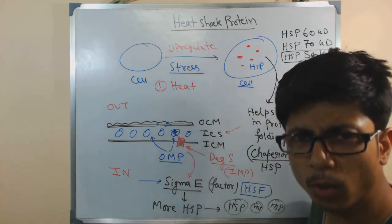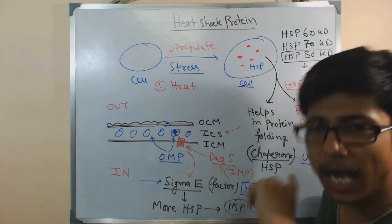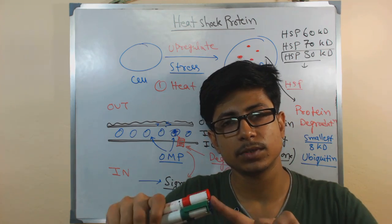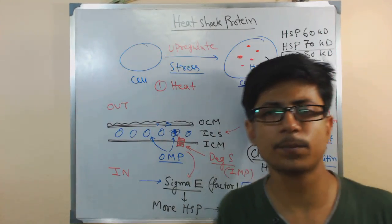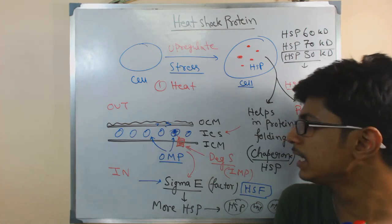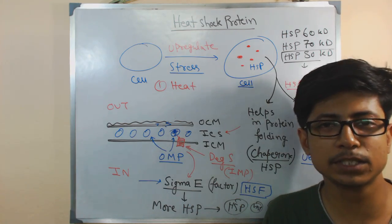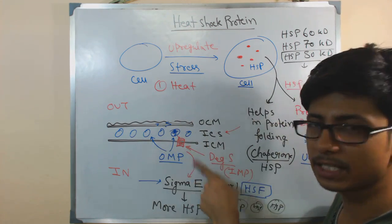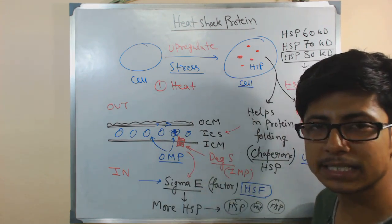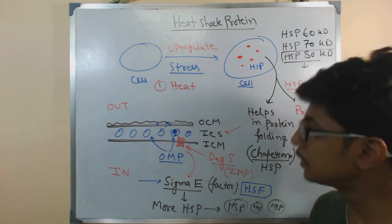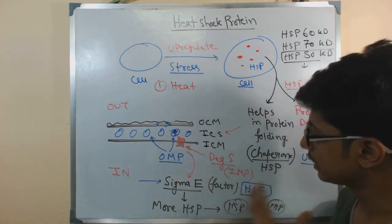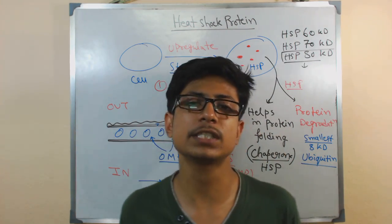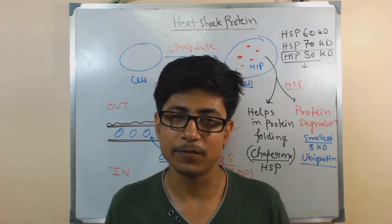Heat, cold, or pH change ultimately destroys the complete setup of protein folding — it works against the conditions required for proper protein folding, so protein folding is halted. This provides a signal through this pathway. When homeostasis is imbalanced, the cell produces HSPs to take care of the situation.